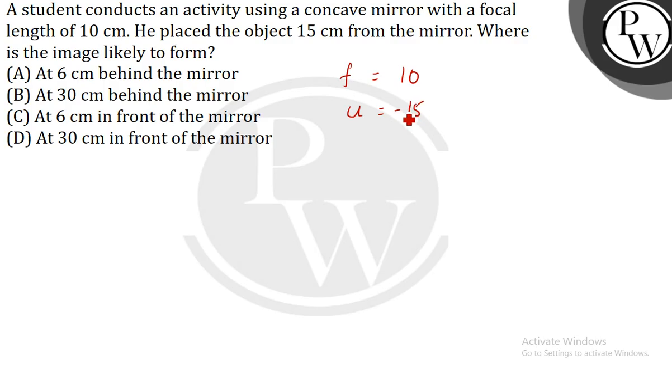According to the mirror formula, 1/f equals 1/v plus 1/u. The focal length in case of a concave mirror is negative, so 1/-10 equals 1/v plus 1/-15.